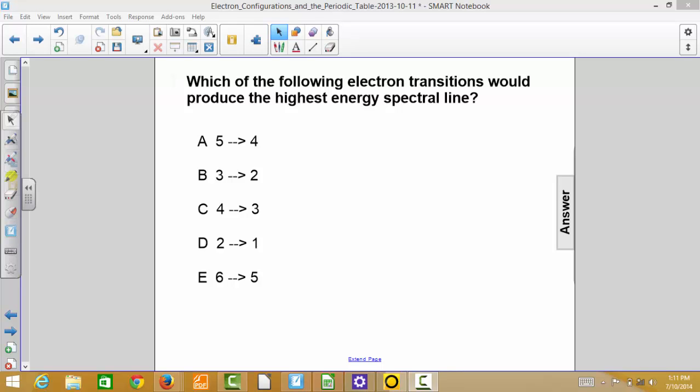Which of the following electron transitions would produce the highest energy spectral line? The choices are 5 to 4, 3 to 2, 4 to 3, 2 to 1, and 6 to 5.